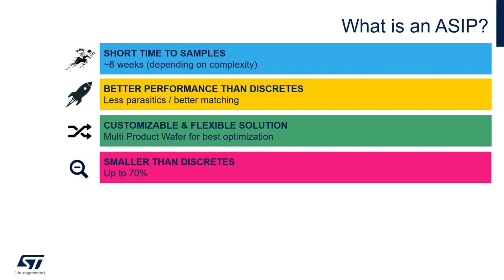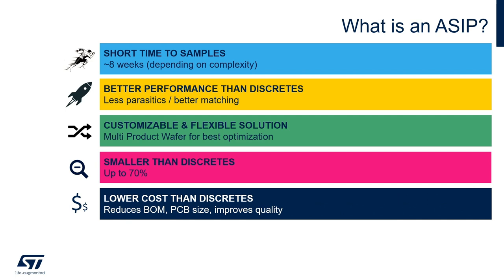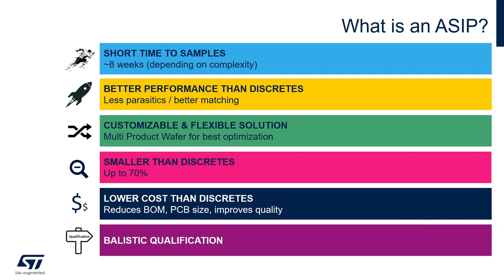We have seen size reductions of up to 70%. In a world where miniaturization is becoming a common language for all markets, that is a significant benefit. ASIPs can help reduce the cost of a system, and the process to bring a product to full maturity is usually straightforward and well defined.